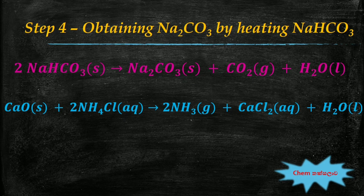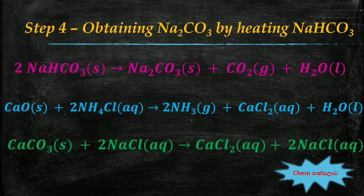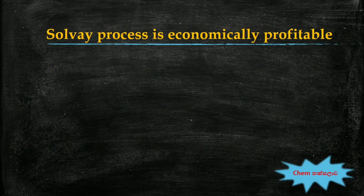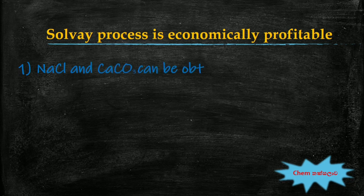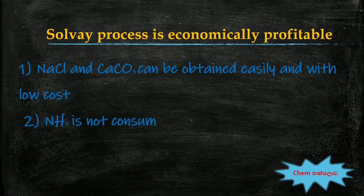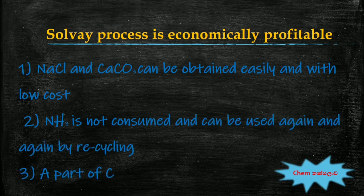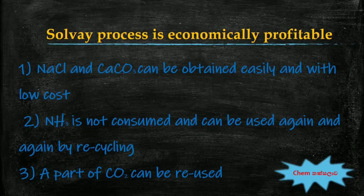The overall theoretical reaction for the entire process is as follows. Keep in mind that just by mixing solid calcium carbonate and anhydrous sodium chloride we cannot prepare sodium carbonate. The final byproduct of this process is calcium chloride, which can also be used in other industries. The Solvay process is economically profitable because sodium chloride and calcium carbonate are readily available and low-cost raw materials, ammonia is not consumed and can be recycled, and a part of the carbon dioxide can also be reused.